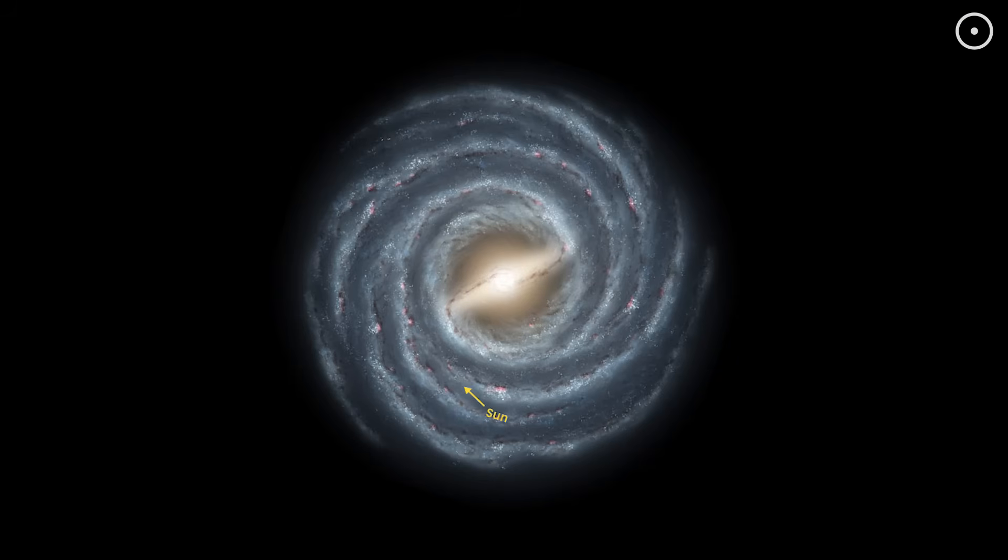The closest known magnetar to Earth is SGR 0418 plus 5729, sitting at about 6,500 light-years away. That's practically next door in galactic terms.